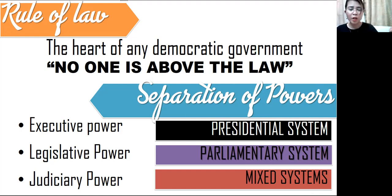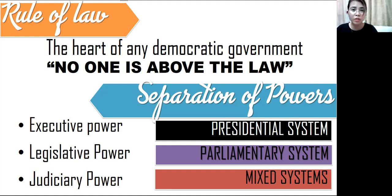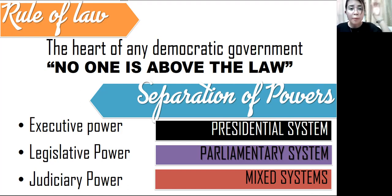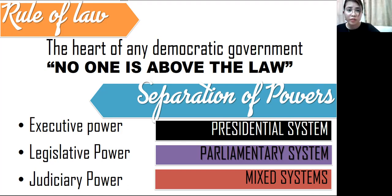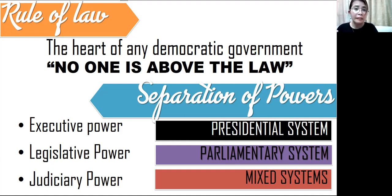Under the separation of powers, this involves the three branches of government. If you look back at your Politics and Governance subject, the three branches are the legislative, executive, and the judiciary. Each branch has its own power: executive power, legislative power, and judiciary power. While the rule of law safeguards equality within the state, the separation of powers ensures the provisions of checks and balances — how power is distributed among the branches of government.